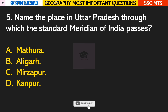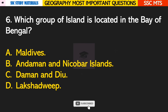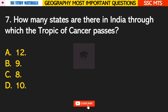Question number 5: name the place in Uttar Pradesh through which the Standard Meridian of India passes. Answer C — Mirzapur. Question number 6: which group of islands is located in the Bay of Bengal? Answer B — Andaman and Nicobar Island.